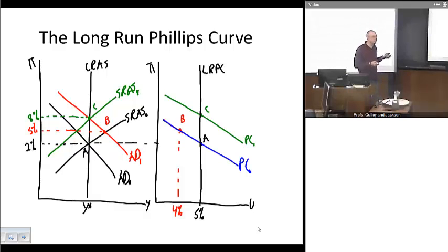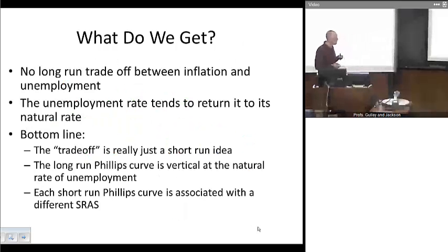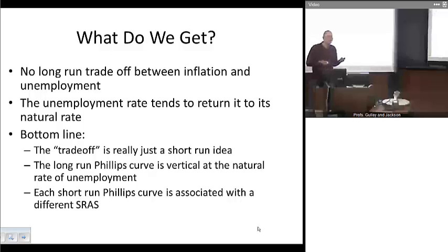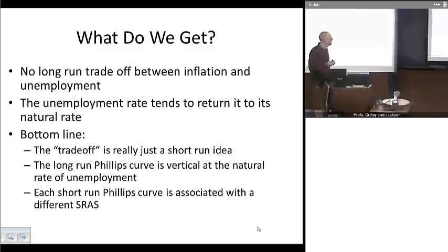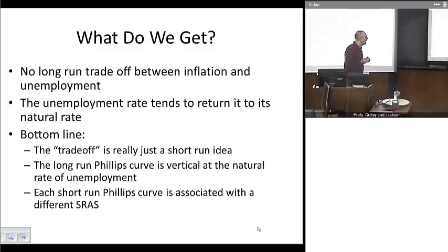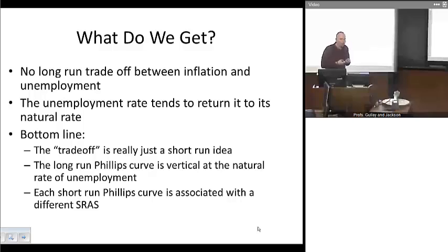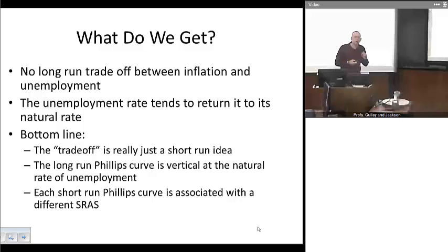The inverse relationship we observe between inflation and unemployment is only a short-run phenomenon — it does not last in the long run. Our basic point is that there isn't a long-run tradeoff between inflation and unemployment, and that the unemployment rate tends to return to whatever its natural rate is — 5% in our example. The tradeoff is really nothing more than a short-run idea. We've, in effect, invented the long-run Phillips curve, which shows there's no tradeoff between inflation and unemployment in the long run. We've also shown that each short-run Phillips curve is associated with its own short-run aggregate supply curve.